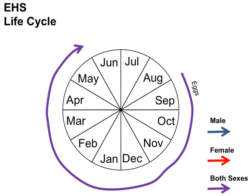This species completes one generation in a year here in the northeast. If the weather is mild enough, this species can fit in a partial second generation. However, those nymphs from that partial second generation generally die in the winter. This species does complete two full generations in their native Japan as well as in some areas of the southeastern United States.